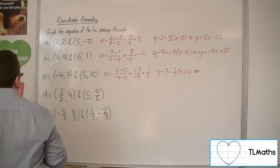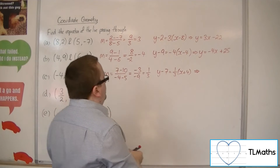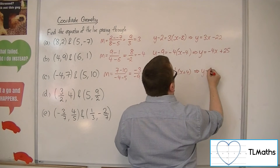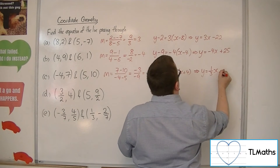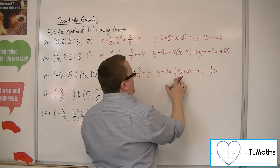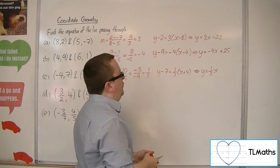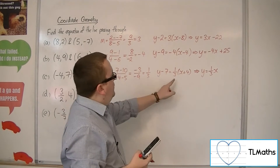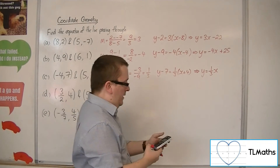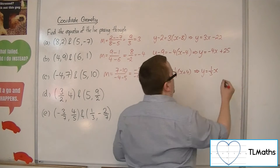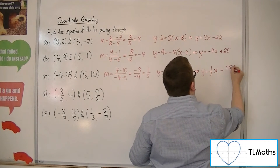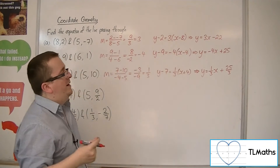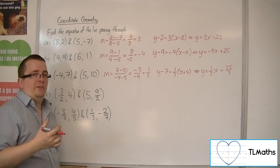So at this point, multiplying out the bracket, we'll have y equals 1 third x. We're then going to have a third times 4, so 4 thirds. And then we're going to add the 7 to both sides, and that gives me 25 thirds. And there is the equation of the line in y equals mx plus c form.